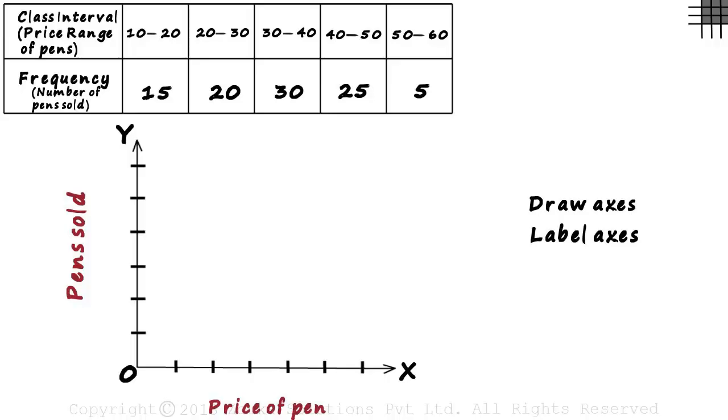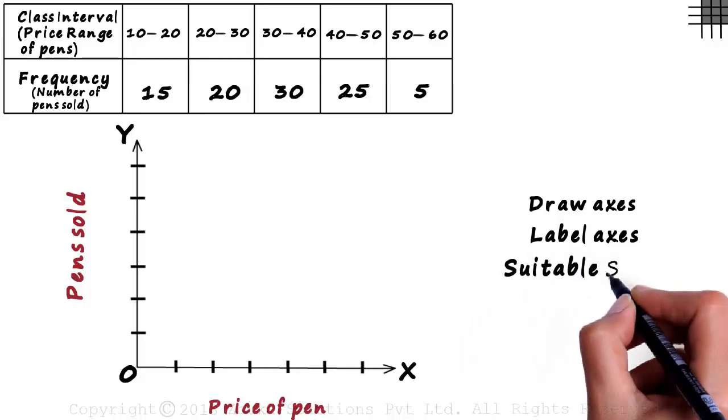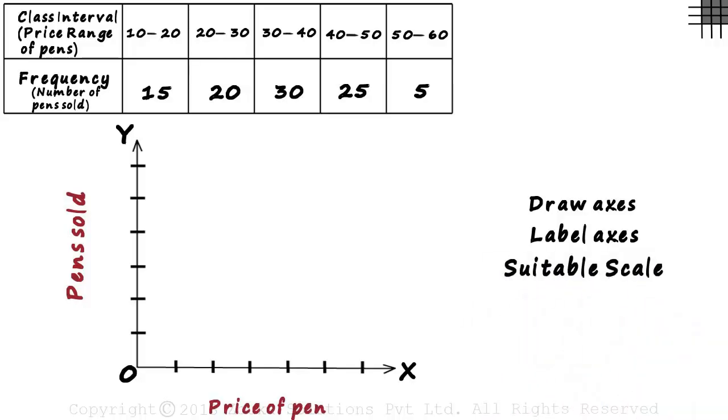The steps are similar to the ones we used to draw a bar graph. Now we have to choose a suitable scale for the y axis. The number of pens sold range between 5 and 30. A scale of 1 centimeter equals to 5 pens on the y axis would be perfect as we would need just six divisions.